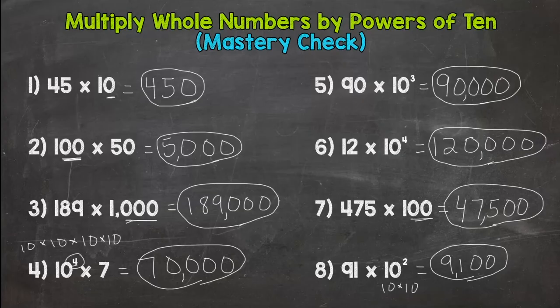So that's our mastery check for multiplying whole numbers by powers of 10. Hopefully you had at least six, seven, or maybe you were eight for eight out of that eight. That was your goal there. So hopefully you did well.